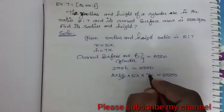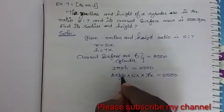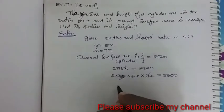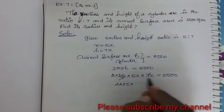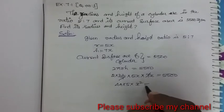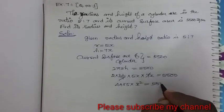Next, this 7 and this 7 cancel. So 22 into 2 is 44. So 44 into 5 into x into x, which is x squared, is equal to 5,500.